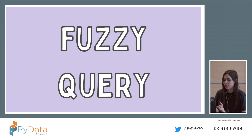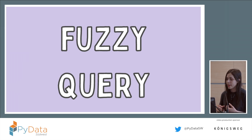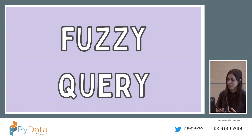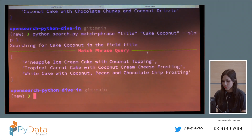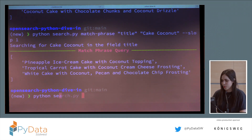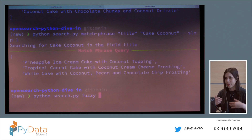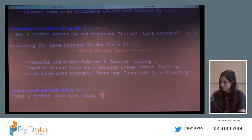Another query I want to show is the fuzzy query. OpenSearch allows fuzziness — for example, when a user mistypes a word and you want to be flexible. For the fuzzy query, I chose the word 'desert' because it's very close to 'dessert' — they're similar. Let's suppose I mistype it and look for 'dessert' with fuzziness zero — I get no results.